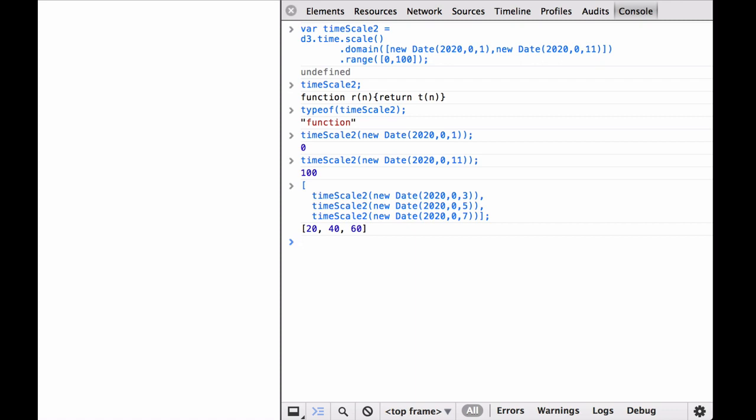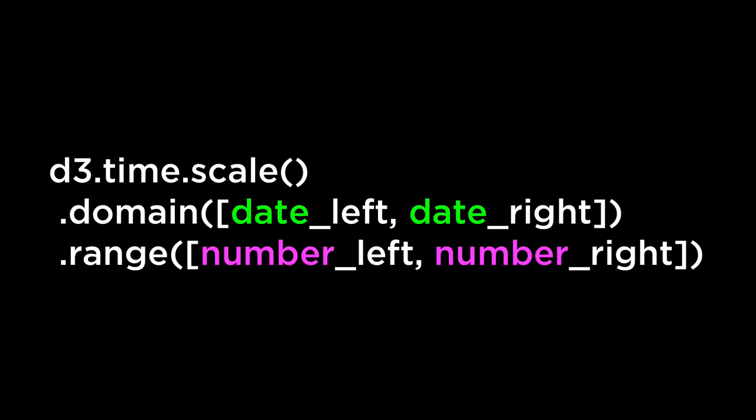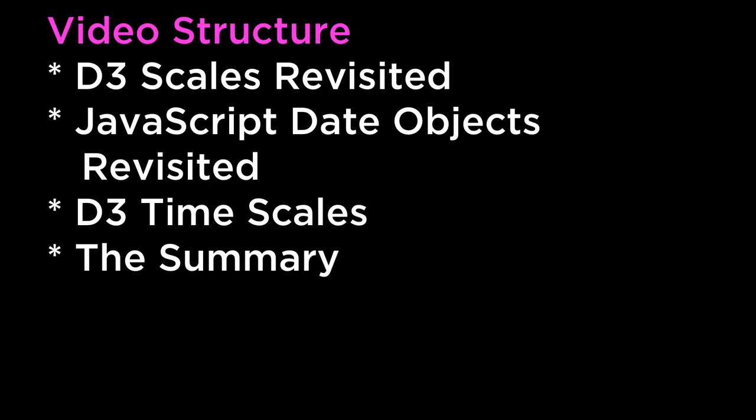From this we can see that after we define the function with our initial data we can use it to convert data for later use. We can also use the time scale function to shift data to the right or left, as well as combine scaling and shifting. The domain of D3 time scale takes in dates; the range takes in numbers. This is incredibly helpful when building data visualizations that contain dates and times, both for constructing the SVG viewport and for doing the x-axis and/or y-axis. This video covered D3 scales revisited, JavaScript date objects revisited, D3 timescales, and the summary.